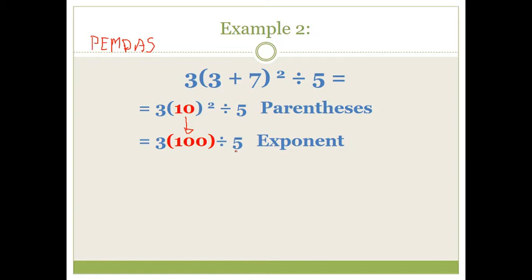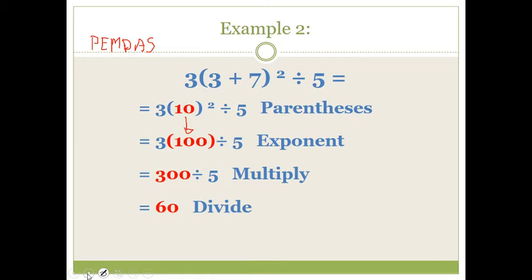So I did 10 times 10 and got 100. No more exponents, so now I move on to multiply and divide from left to right. I do what I come across first — and this means multiply, so 3 times 100 is 300. Now I'm only left with 300 divided by 5, so I do that last step and get 60.